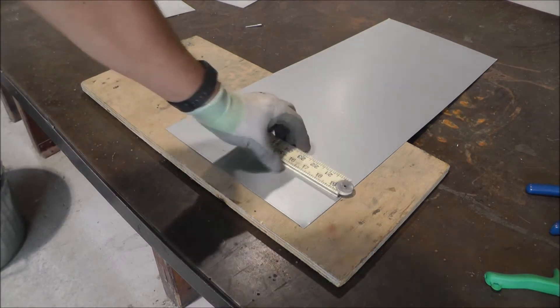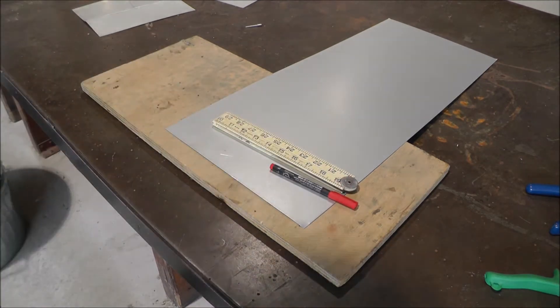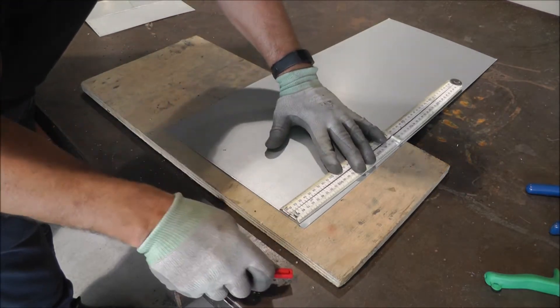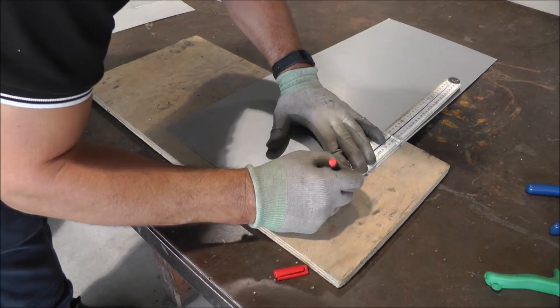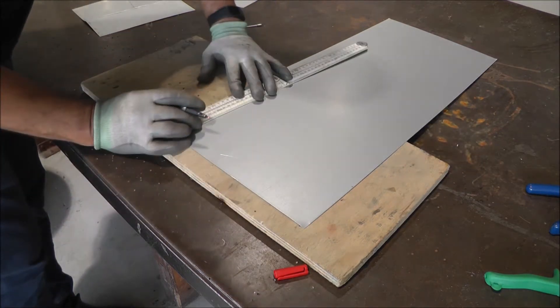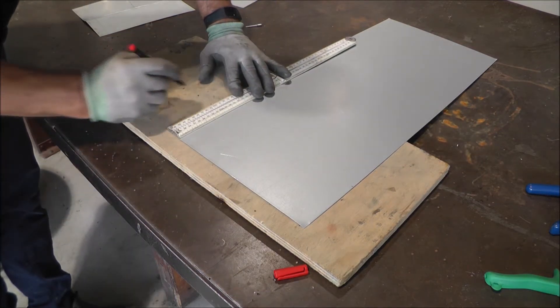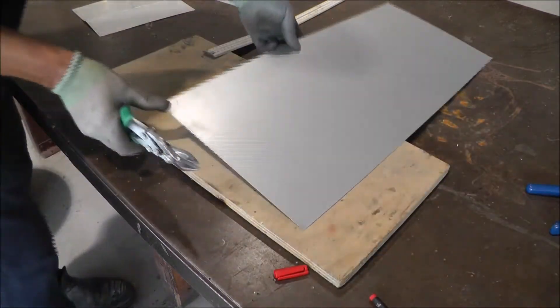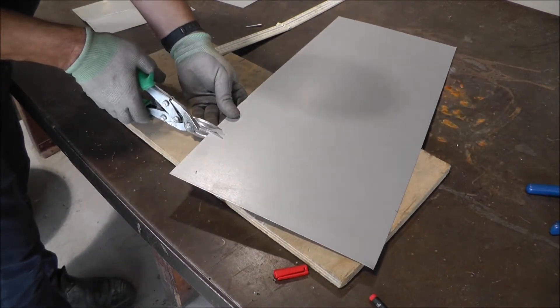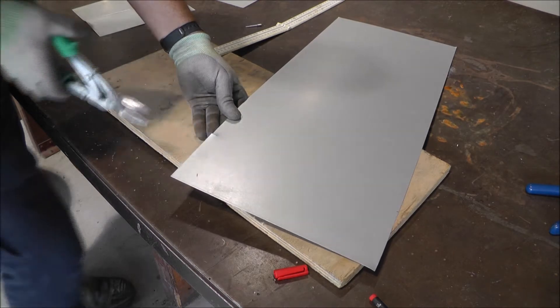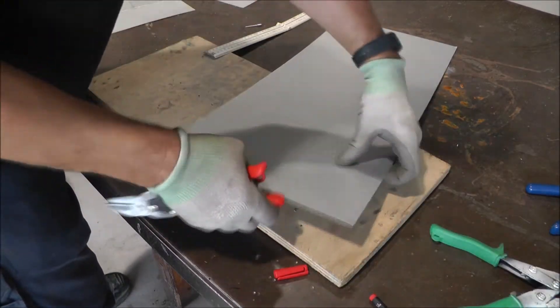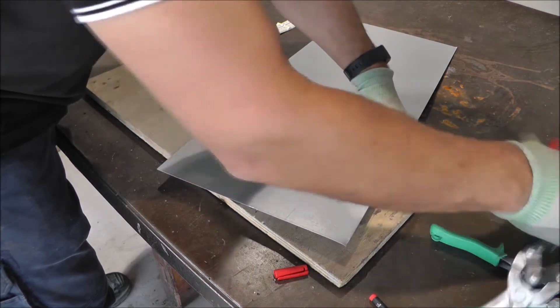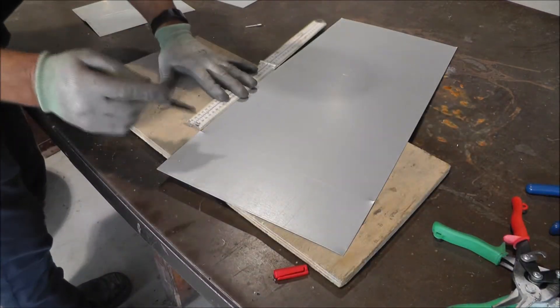We'll start by marking out the sheet metal for cutting using the same method as used in the previous video. To ensure accuracy, we're using a fine line permanent marker and a ruler for marking out. On each of the marks we will put a small nick with opposing snips on each side of the metal, which will help us locate the metal in the guillotine. The next set of marks are taken from the previous cuts. This ensures the marks are made with complete accuracy.